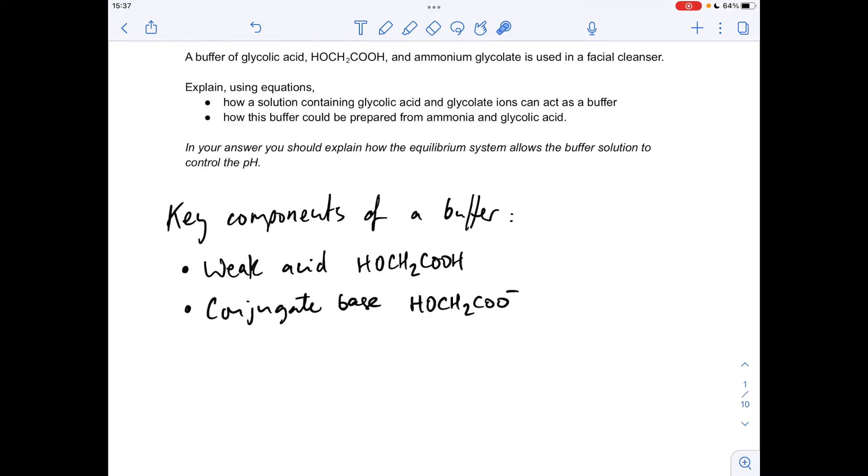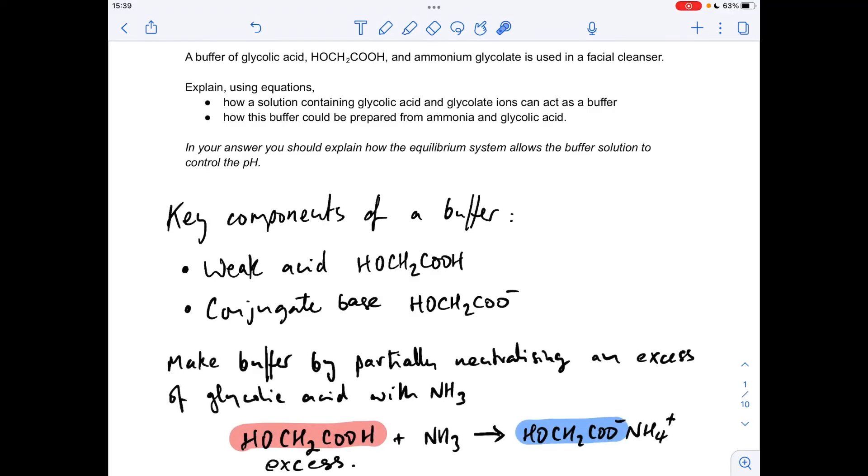At the end of that process, you would still have some glycolic acid left, but you would also have some glycolate ions. You can see from the equation, if you've got an excess of the glycolic acid, obviously at the end of that reaction, you would still have the glycolic acid left. So there's one of your key components, but you'd also have the glycolate ion—that's your other key component.